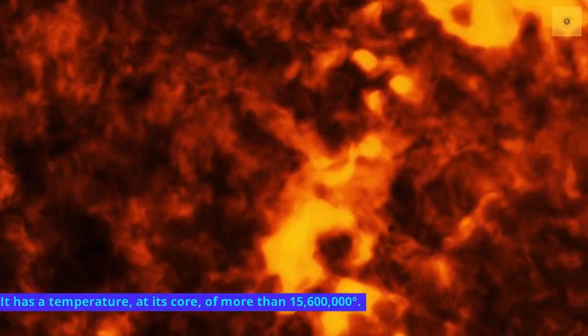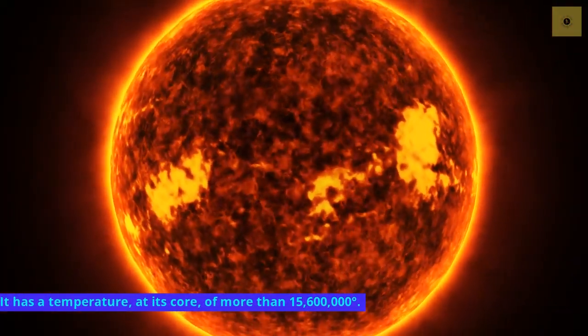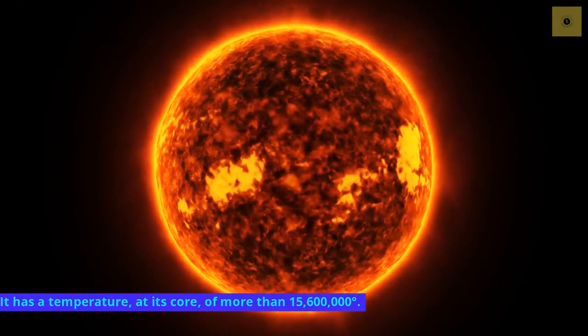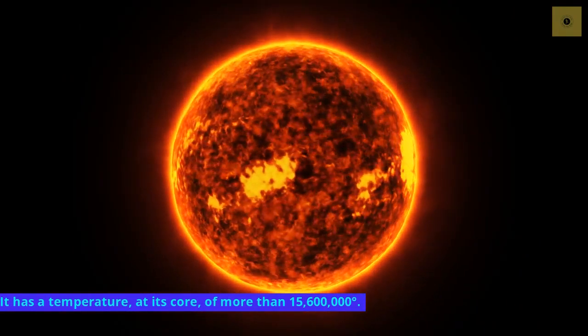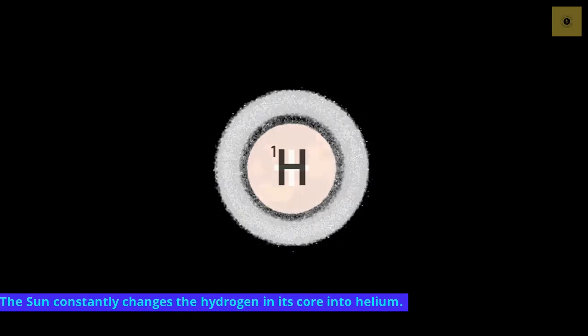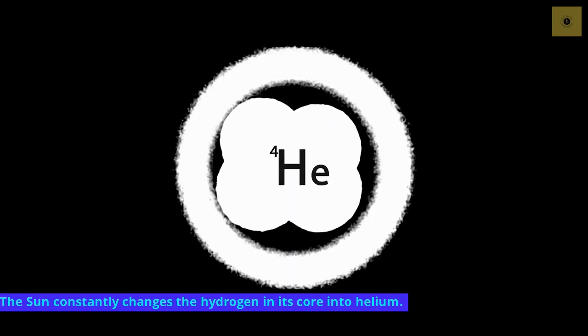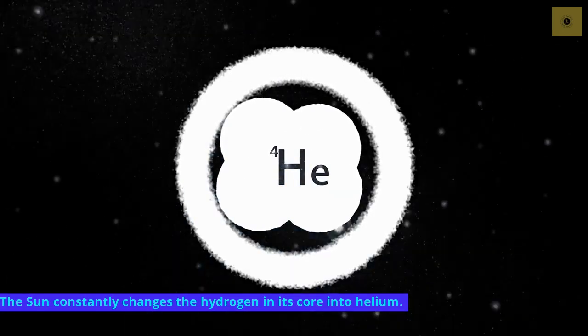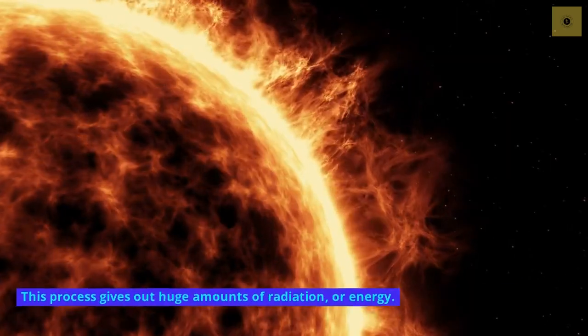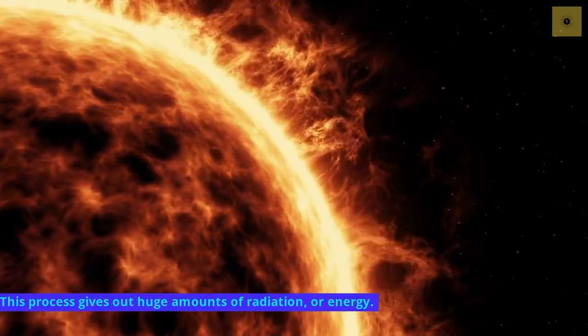It has a temperature at its core of more than 15,600,000 degrees. The Sun constantly changes the hydrogen in its core into helium. This process gives out huge amounts of radiation, or energy.